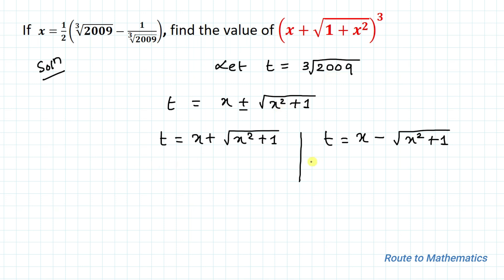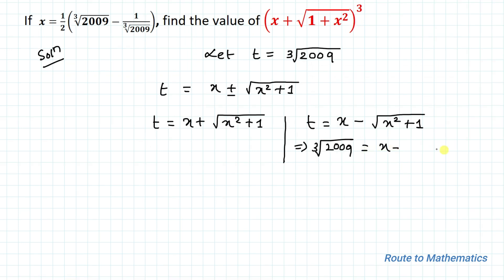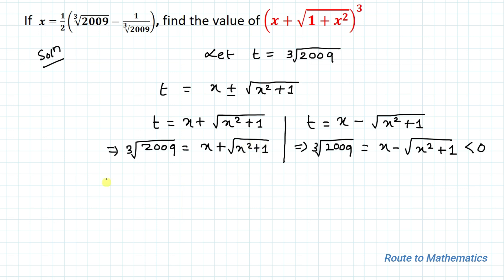Since t = ∛2009, we evaluate both cases. The case x − √(x² + 1) is less than 0, so that cannot be the solution. Therefore t equals x + √(x² + 1), meaning the cube root of 2009 equals x + √(x² + 1). So (x + √(x² + 1))³ — the cube root gets eliminated — equals 2009.